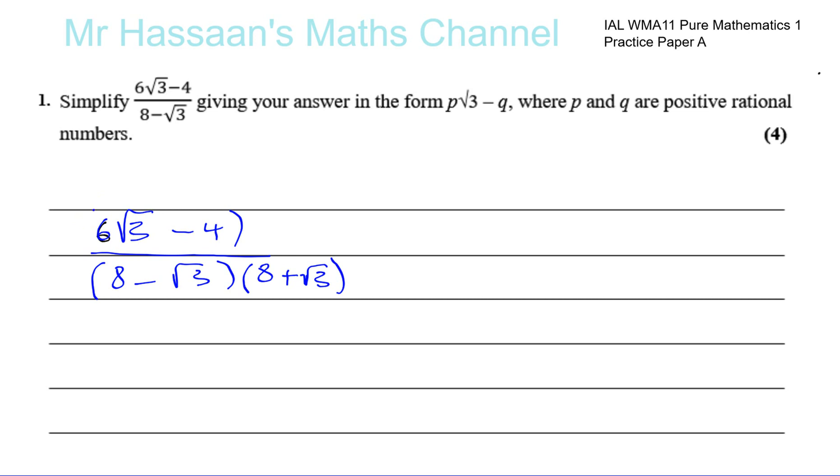But what you do to the denominator of a fraction, you must do the same thing to the numerator, otherwise it won't remain the same value. So I've now multiplied both top and bottom by the same thing, but that thing is going to cause the denominator to become rationalized.